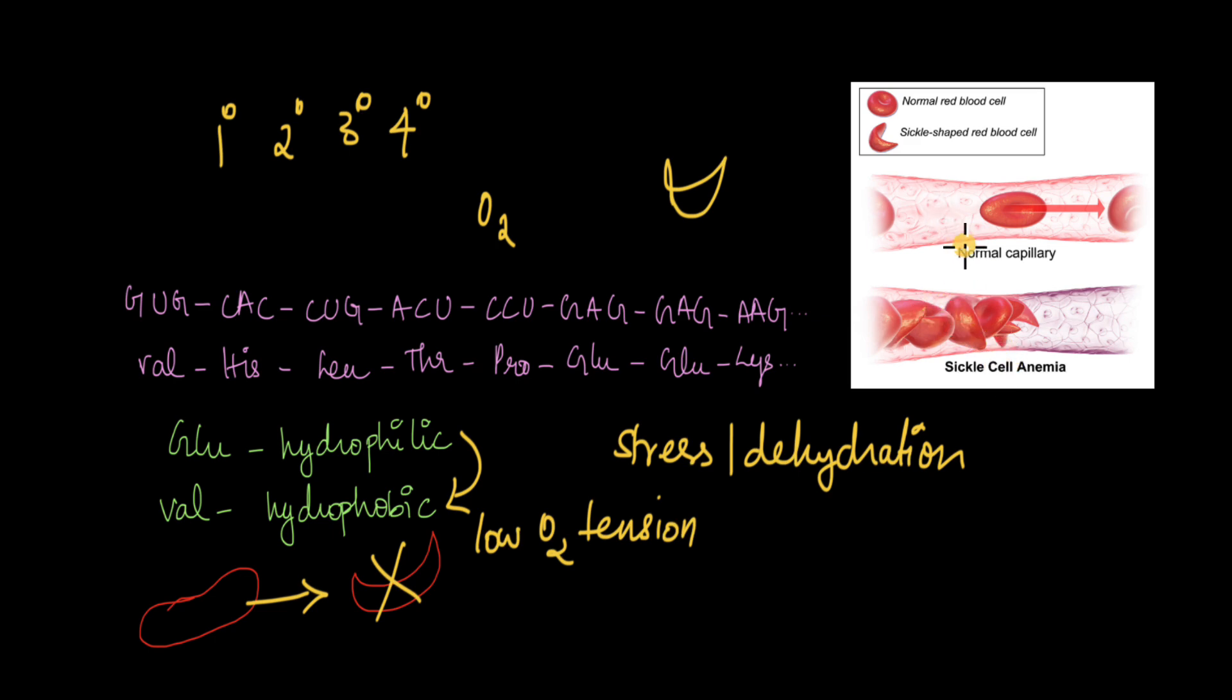The other thing is that normal red blood cells are disc shaped because they can flow easily within the capillaries. But in the case of these sickle shaped red blood cells, they cannot pass through the capillaries as easily. So they block the capillaries and do not allow the normal cells to pass through either.